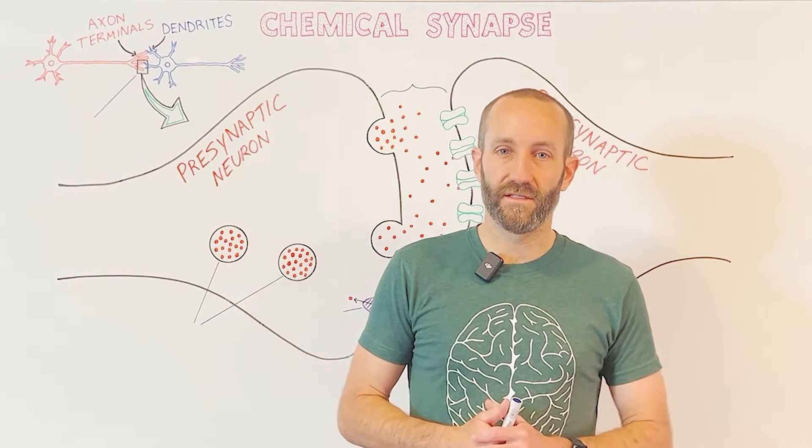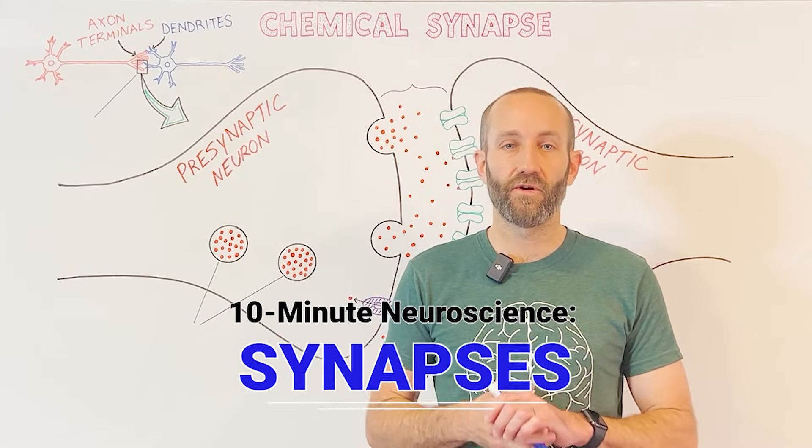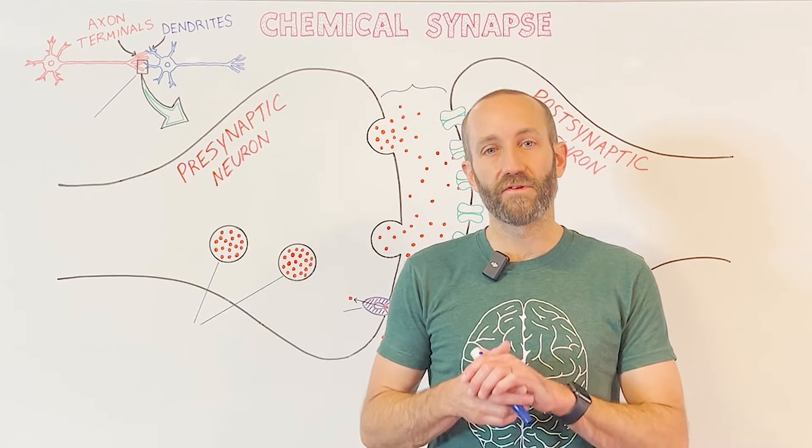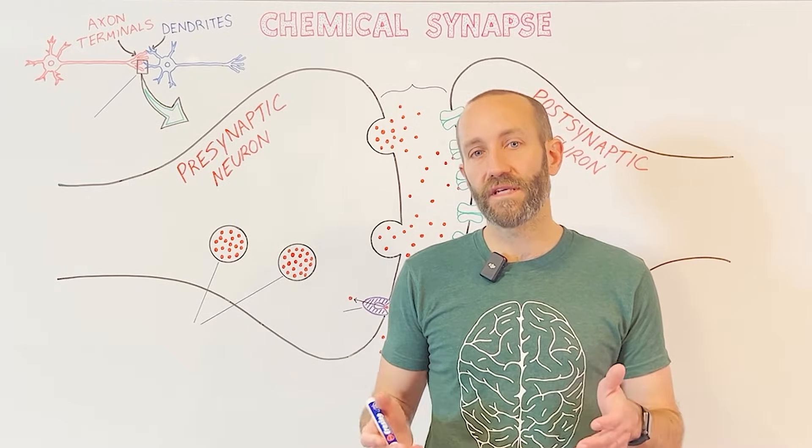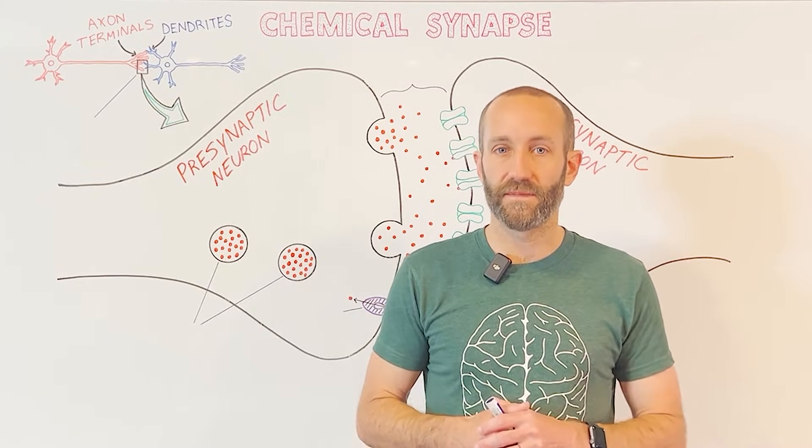Hi everyone, welcome to 10 Minute Neuroscience. In this installment I'll be talking about synapses, the specialized areas where neurons communicate. I'll cover the different components of a synapse, how neurons communicate across synapses, and the differences between chemical and electrical synapses.